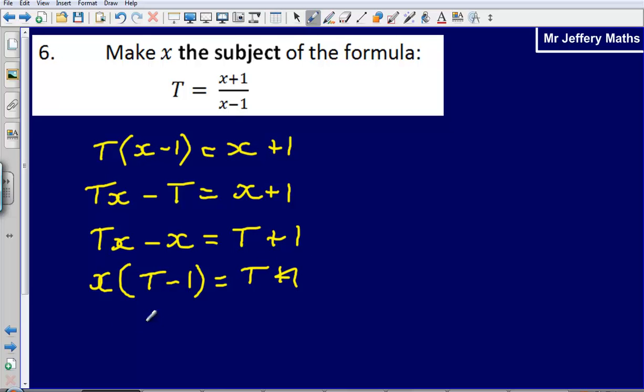And then that leaves me with getting rid of this x multiplied by T minus 1 just by dividing by T minus 1. So I end up with x is equal to T plus 1 divided by T minus 1. And that there is going to be my final answer.